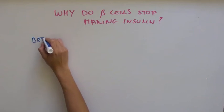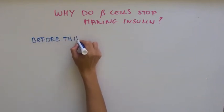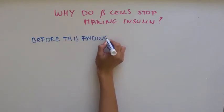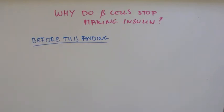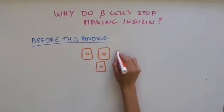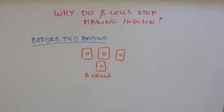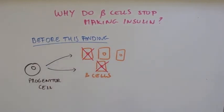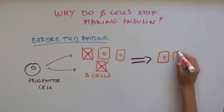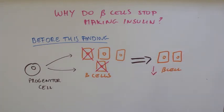Before this finding came out, there was much controversy in the field trying to understand why beta cells can no longer produce insulin in type 2 diabetic patients. Some scientists thought that the beta cells died more quickly than they were replenished, which caused a net reduction in the number of cells that produce insulin. But what this paper is showing is something a little different.